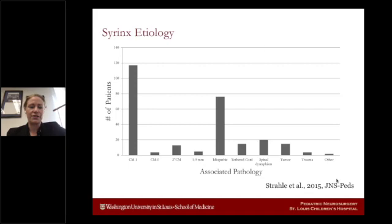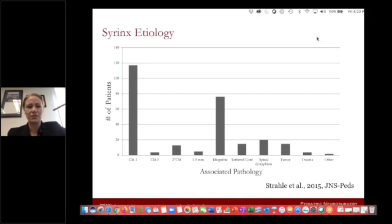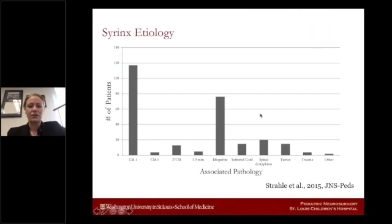This is a breakdown of a consecutive series of about 280 patients imaged with a finding of syrinx. The most common association was Chiari, and the pathophysiology of syrinx in the setting of Chiari malformation has been well studied. We probably have a better understanding of the pathophysiologic relationships between Chiari and syrinx than with other pathologies such as tethered cord and spinal dysraphism. To clarify: spinal dysraphism included kids with intraspinal pathology in addition to a simple fatty filum, whereas tethered cord are those with either a thickened or fatty filum, while spinal dysraphism includes lipomyel, meningocele, myelocystocele, et cetera.